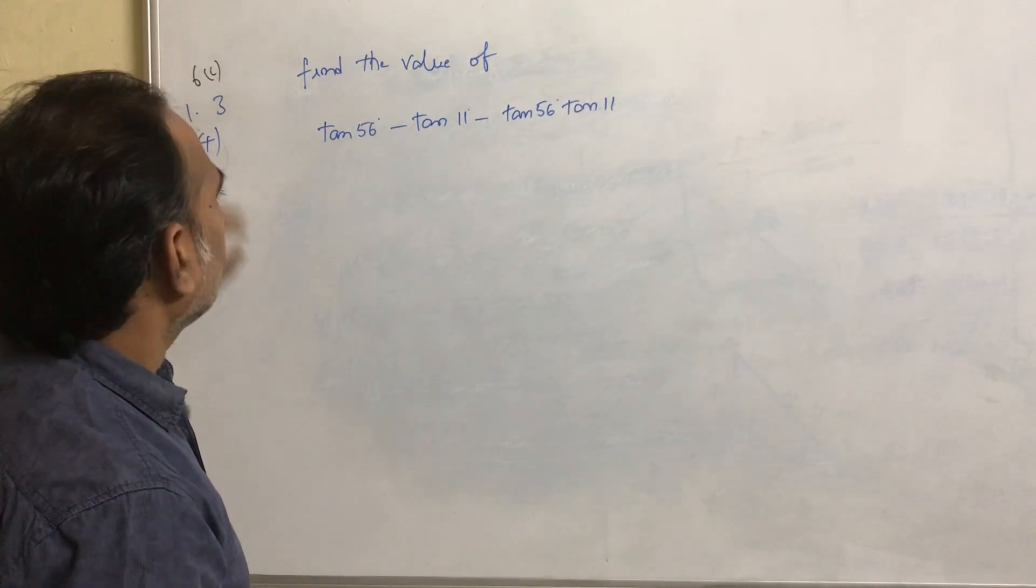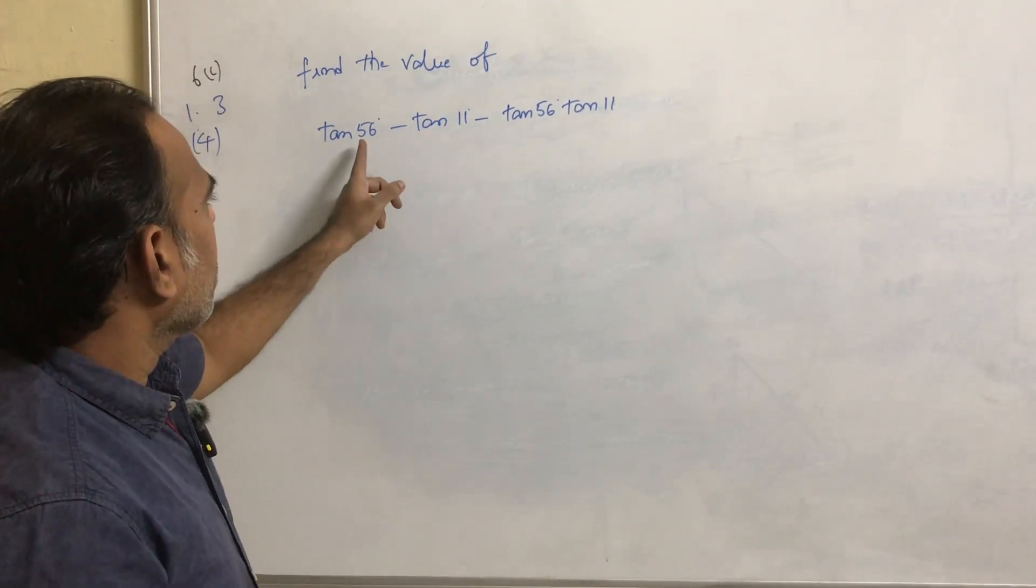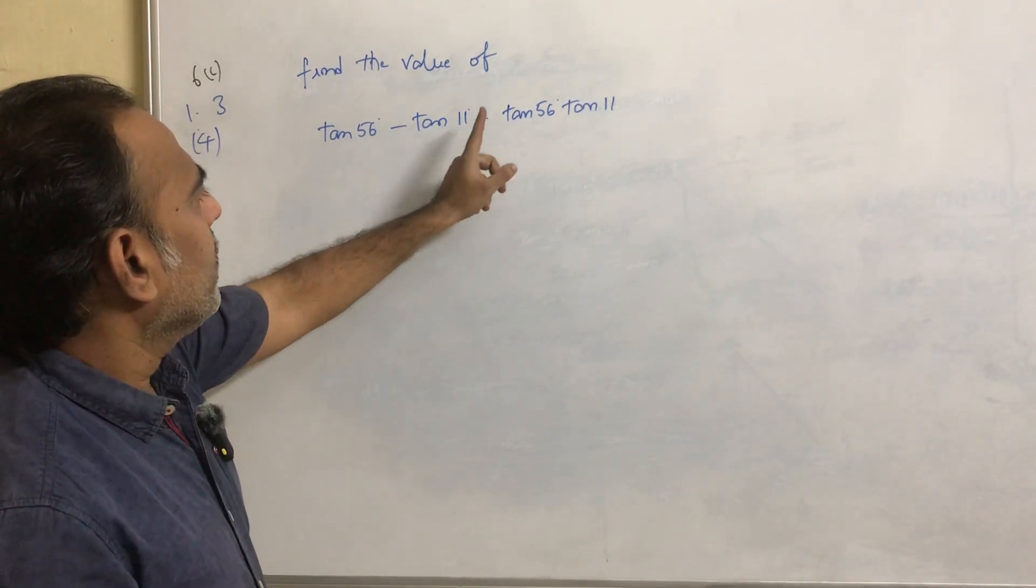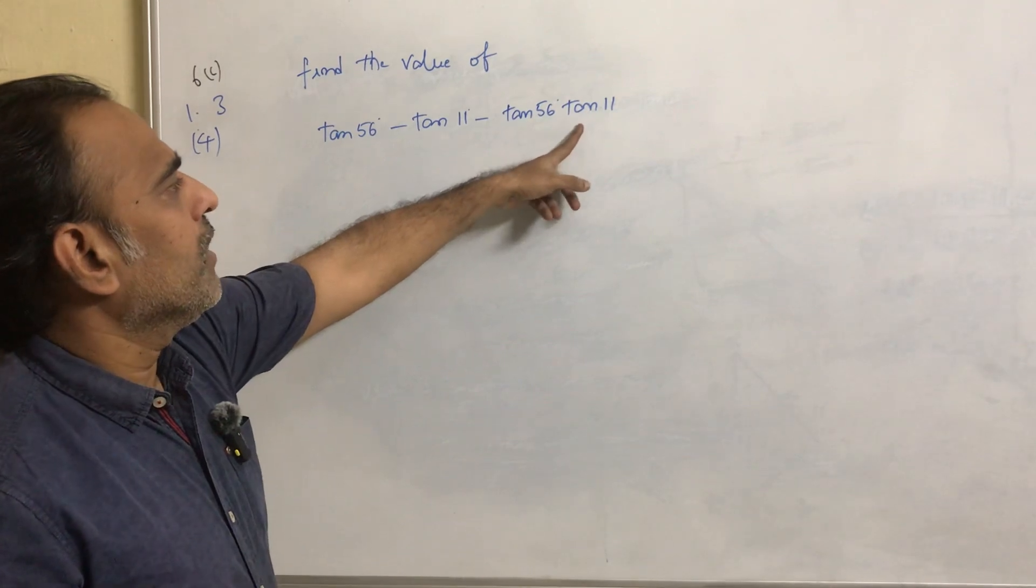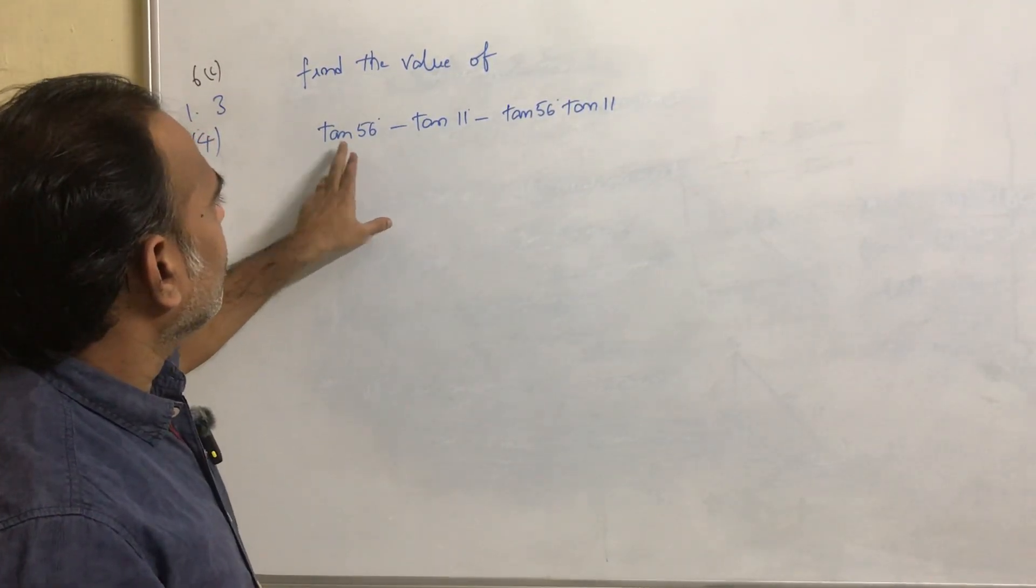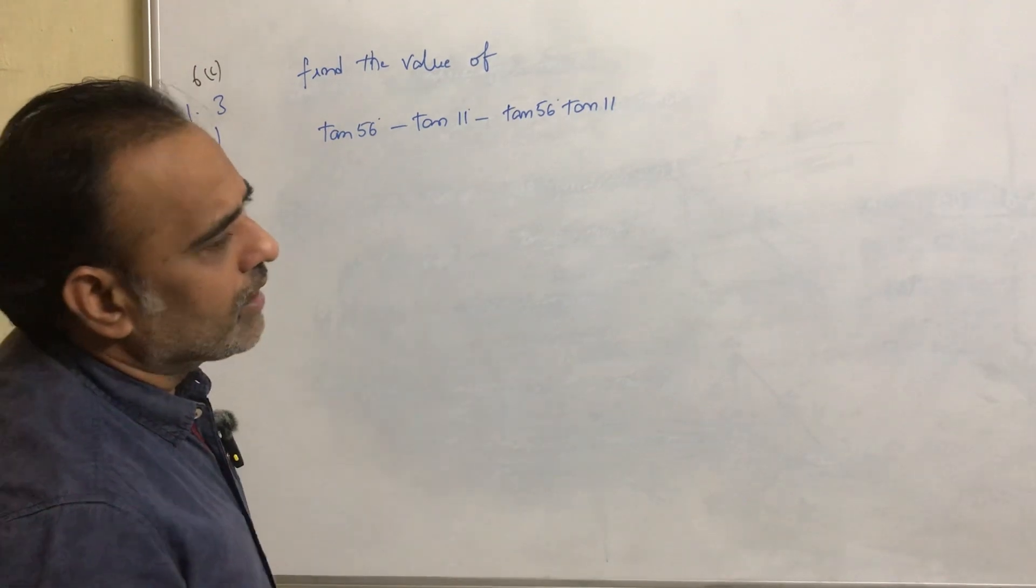If we look at what is given, this is tan a - tan b - tan a tan b format. We will get this type of format if we consider tan(a - b).